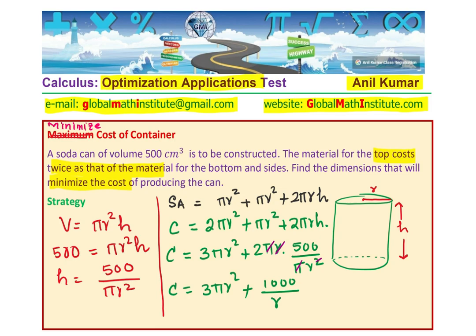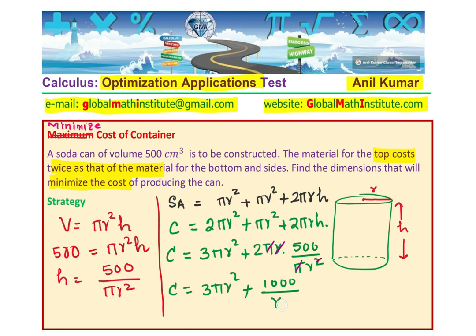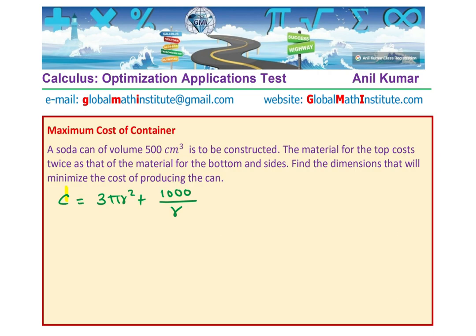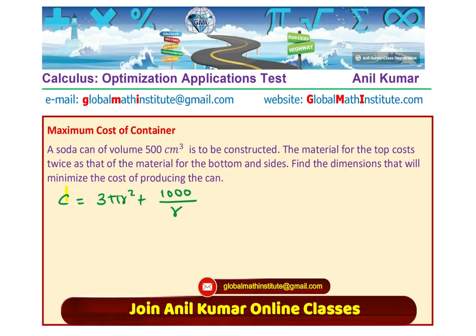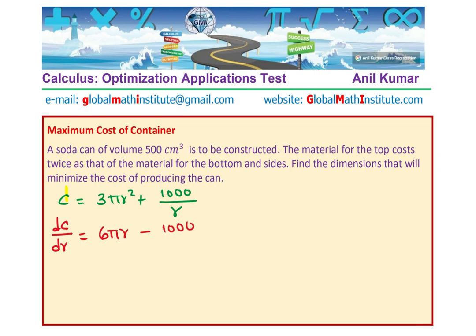Now let us find the solution of this particular equation — how do we minimize the cost? The equation is: cost C equals 3 pi r squared plus 1000 over r. To find the minimum, we have to find the first derivative and analyze it. Differentiating with respect to r, we get dC/dr equals 6 pi r minus 1000 over r squared. We will equate to zero to find the critical number.